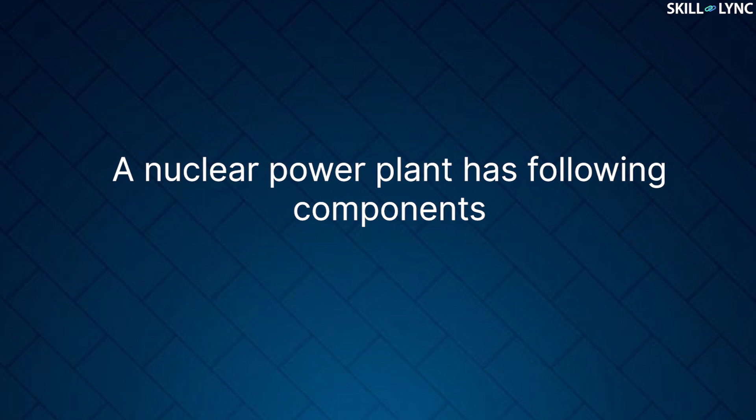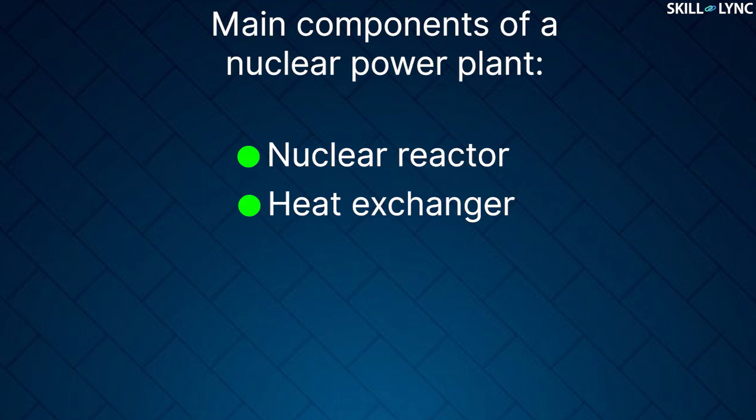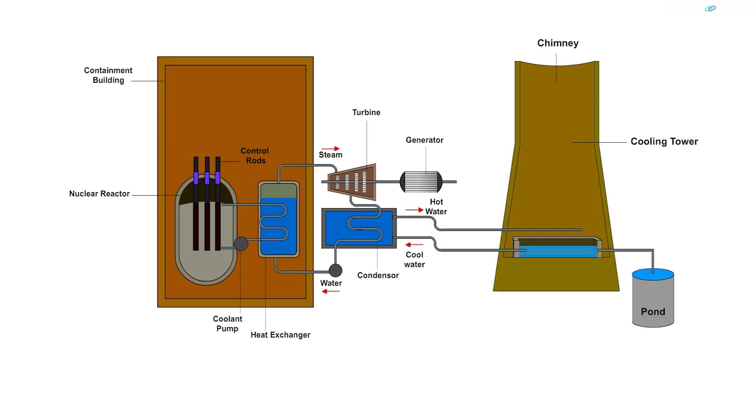A nuclear power plant has the following components: a nuclear reactor, a heat exchanger, a steam turbine, a generator, and a condenser. A nuclear power plant is shown in the diagram here. Let's discuss the components.